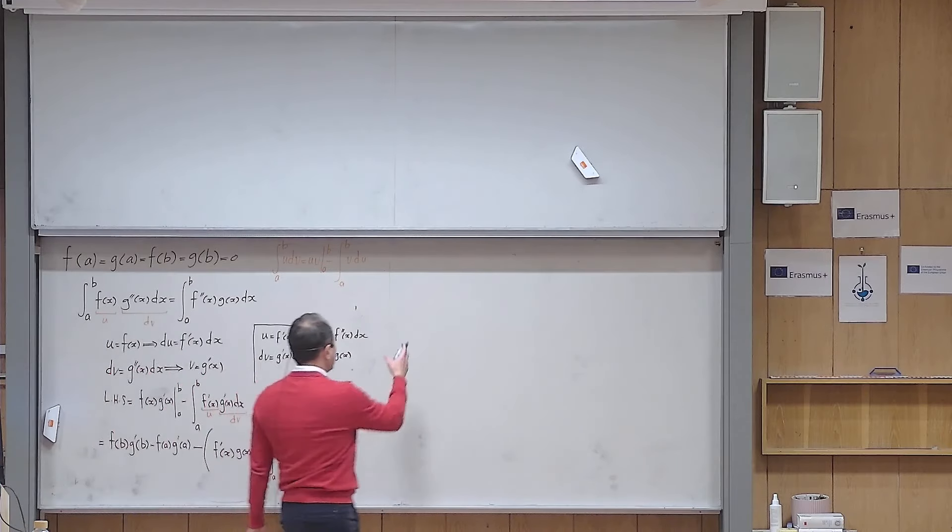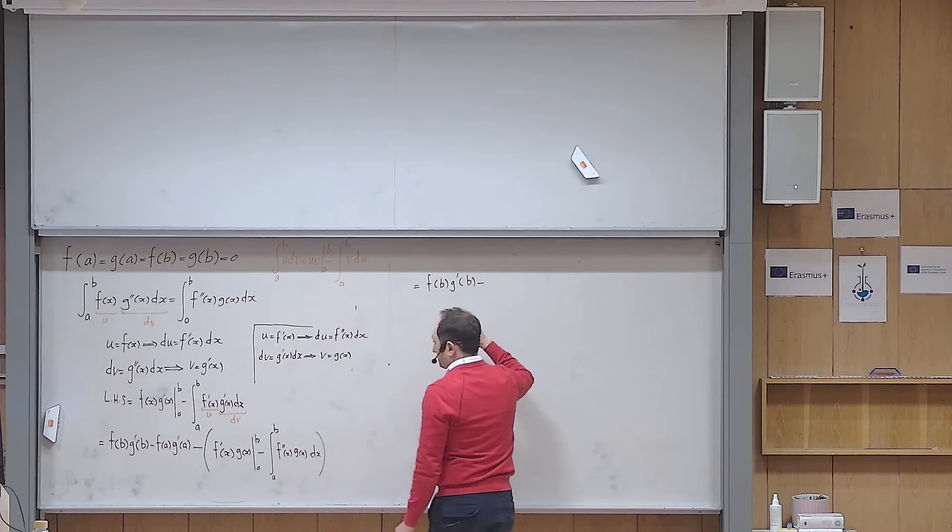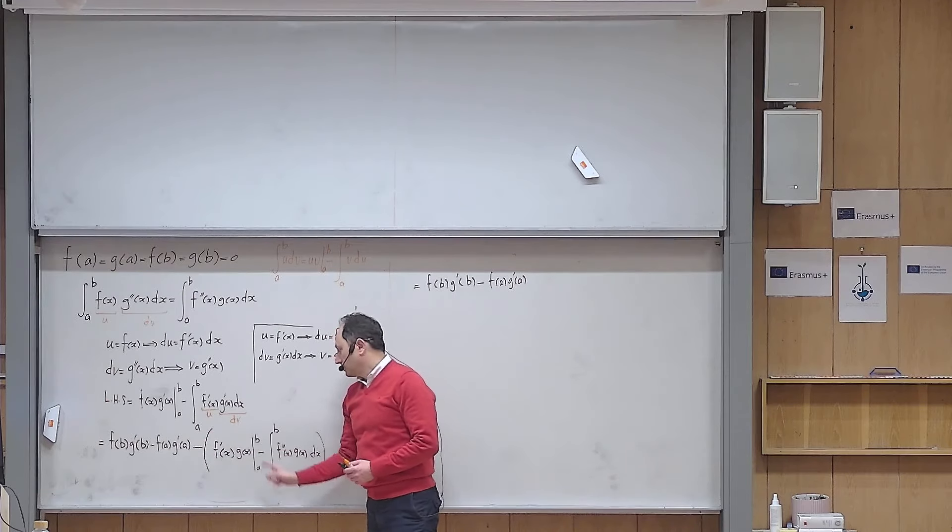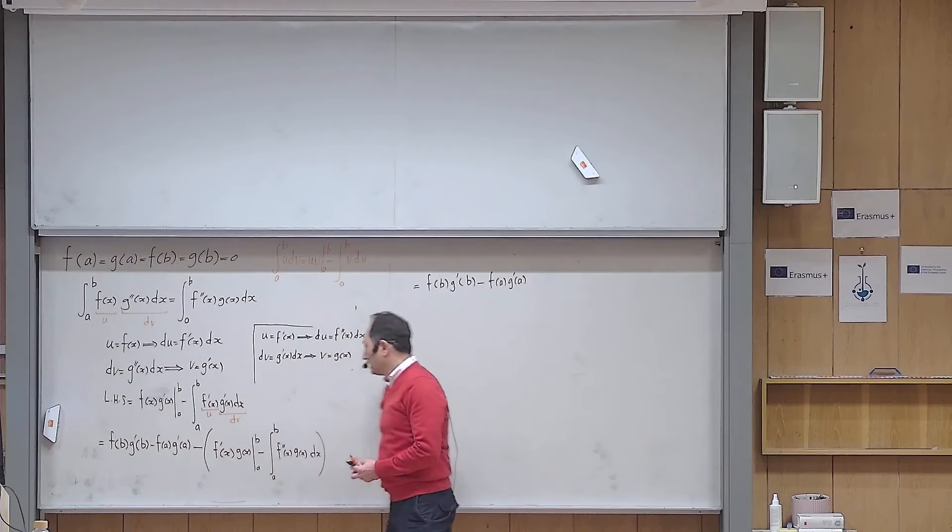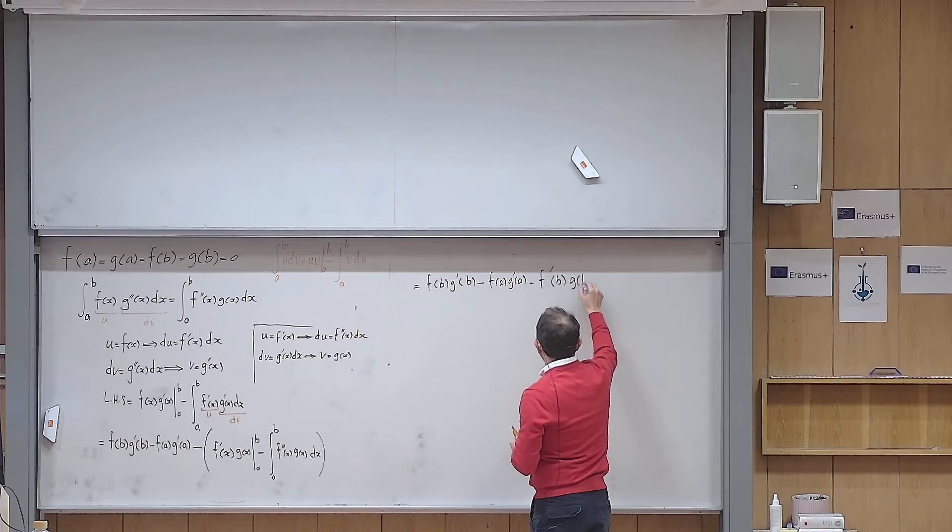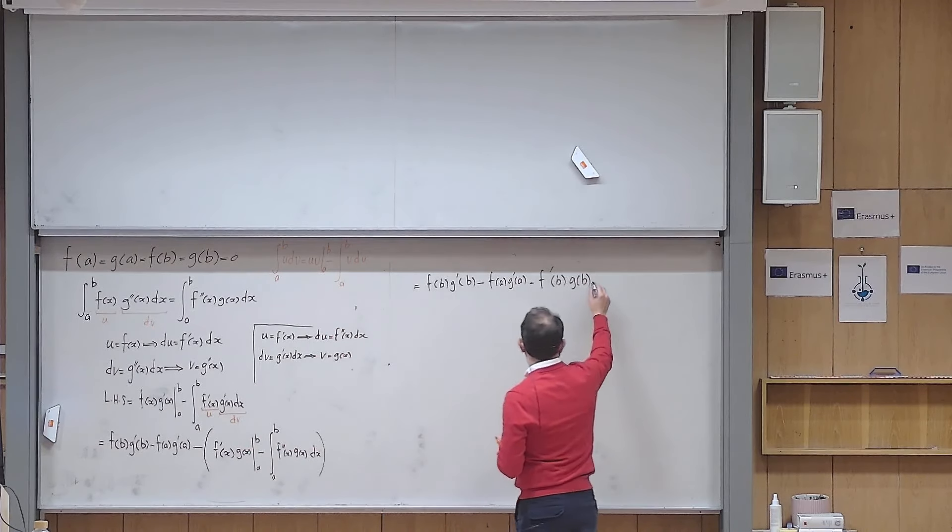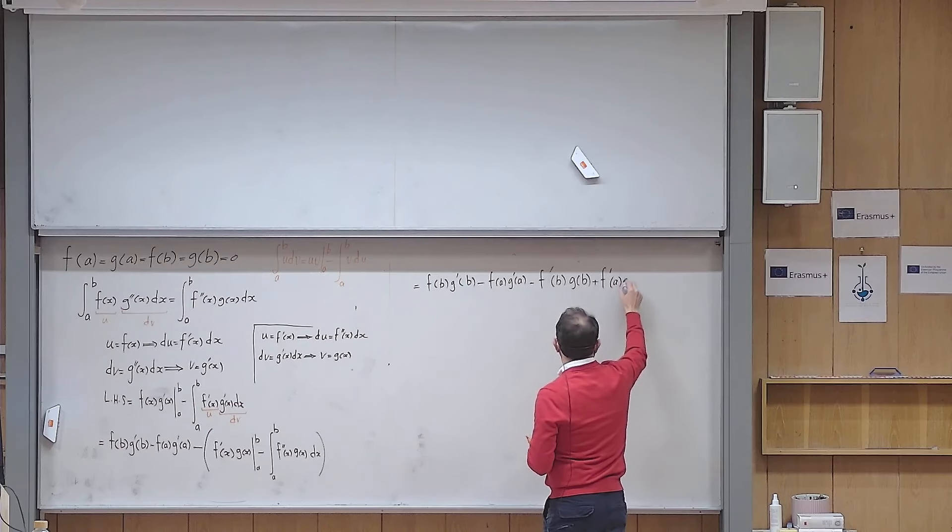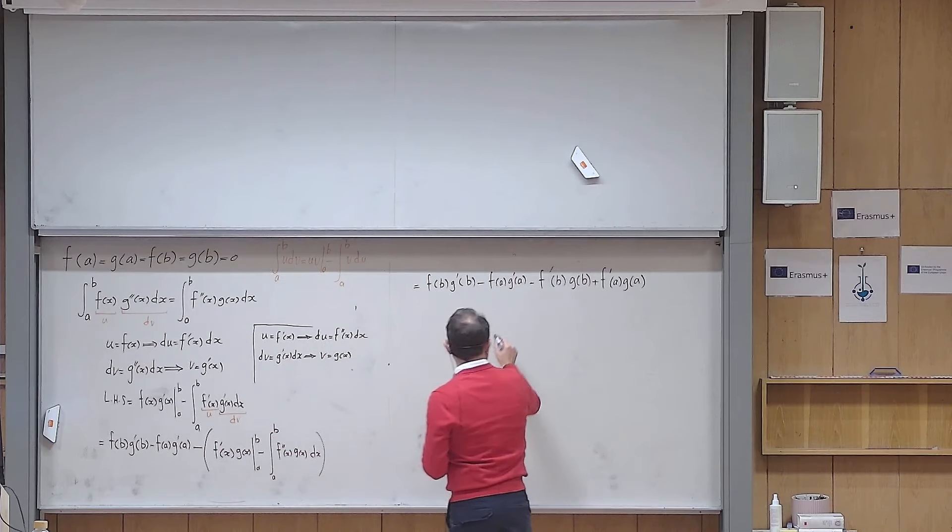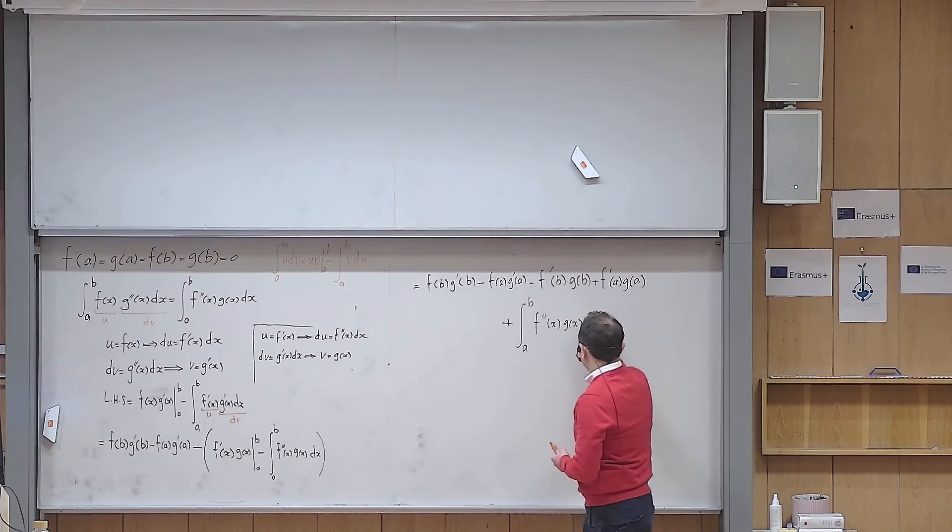So what happens? I will copy and paste the first part. So this becomes equal to f(b)g'(b) minus f(a)g'(a). And I will do the same thing here, but I have to be careful about that minus sign. First, I put b there. But the minus sign will be multiplied. So it becomes minus f'(b)g(b). And then minus, I have to replace x with a. But there is also a minus sign coming there. So it becomes plus f'(a)g(a). And then this minus sign will be multiplied here. So this will give me plus integral from a to b, f''(x)g(x)dx.